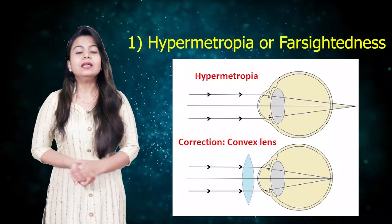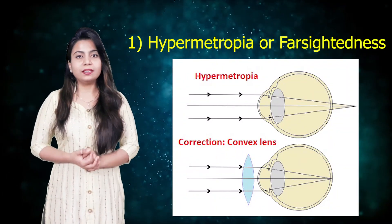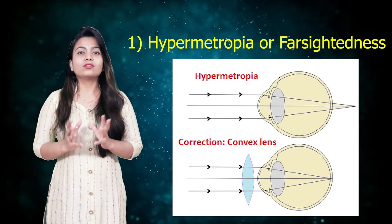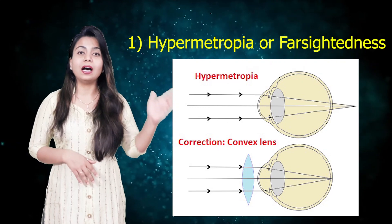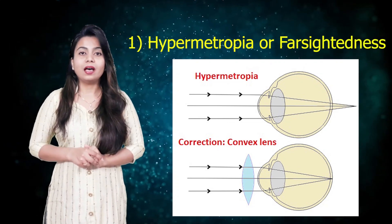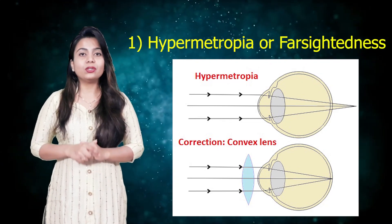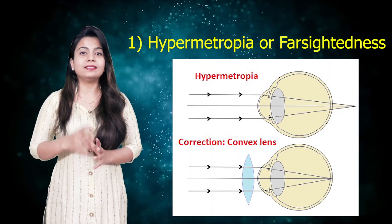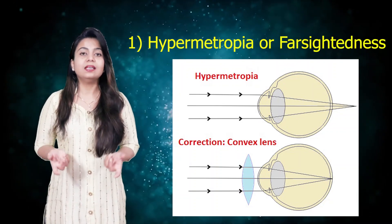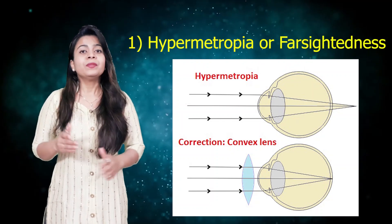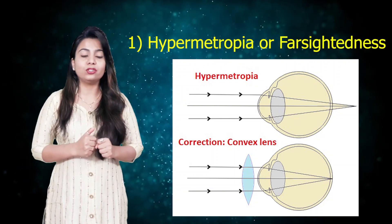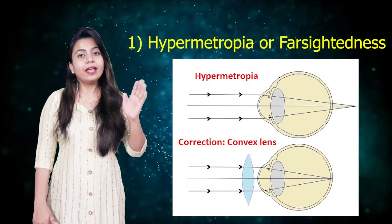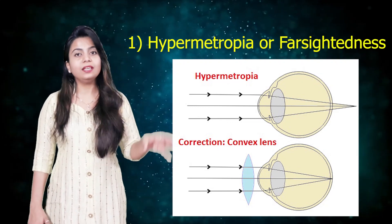Now look here — two pictures are shown. In the first one, this is the case of hypermetropia. In hypermetropia, you can see the image is formed behind the retina. In the next picture, you can see an extra convex lens is there — that is the lens which we use in our specs. What happens is this convex lens helps to converge all the light rays to the retina and helps to form the image on the retina. So in this way, hypermetropia is corrected.